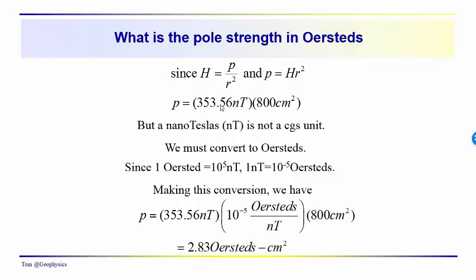The pole strength equals 353.56 nanoteslas times 800 centimeters squared. However, this is a mixed-unit expression since nanoteslas is an SI unit and centimeters squared is a CGS unit. We need to convert nanoteslas to oersteds: one oersted equals 10 to the fifth nanoteslas, so one nanotesla equals 10 to the minus fifth oersteds. Converting: 353.56 nanoteslas times 10 to the minus fifth oersteds per nanotesla times 800 centimeters squared gives 2.83 oersted centimeters squared as the pole strength. That's the answer.